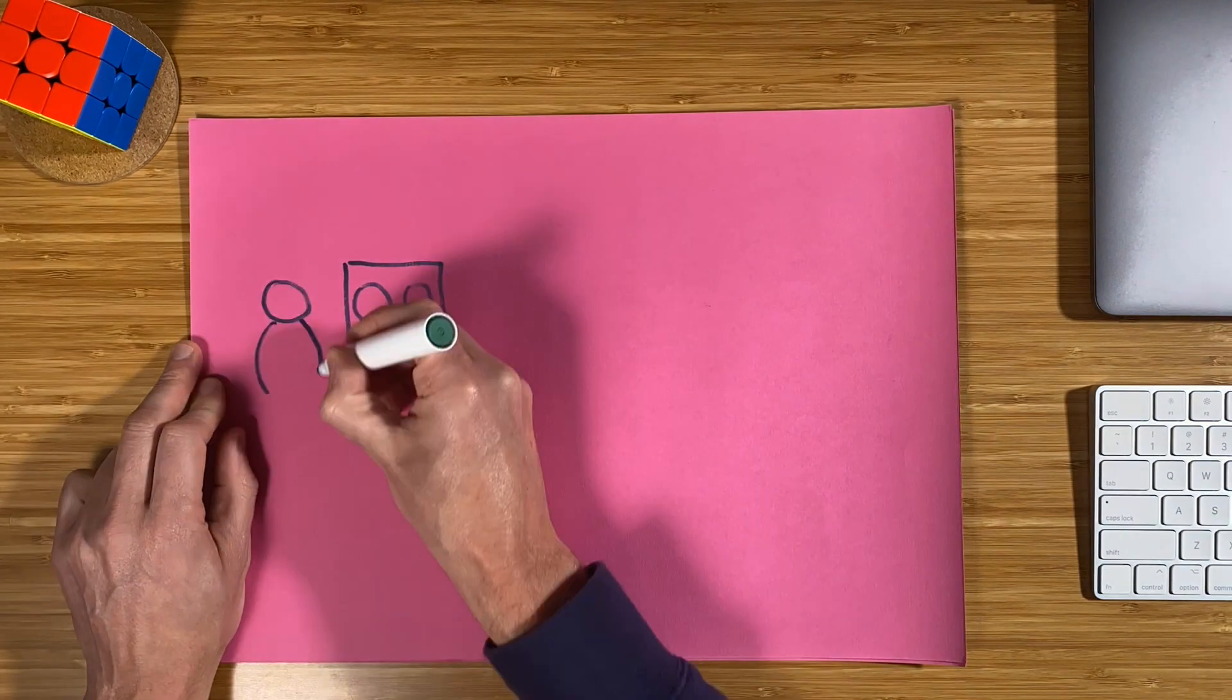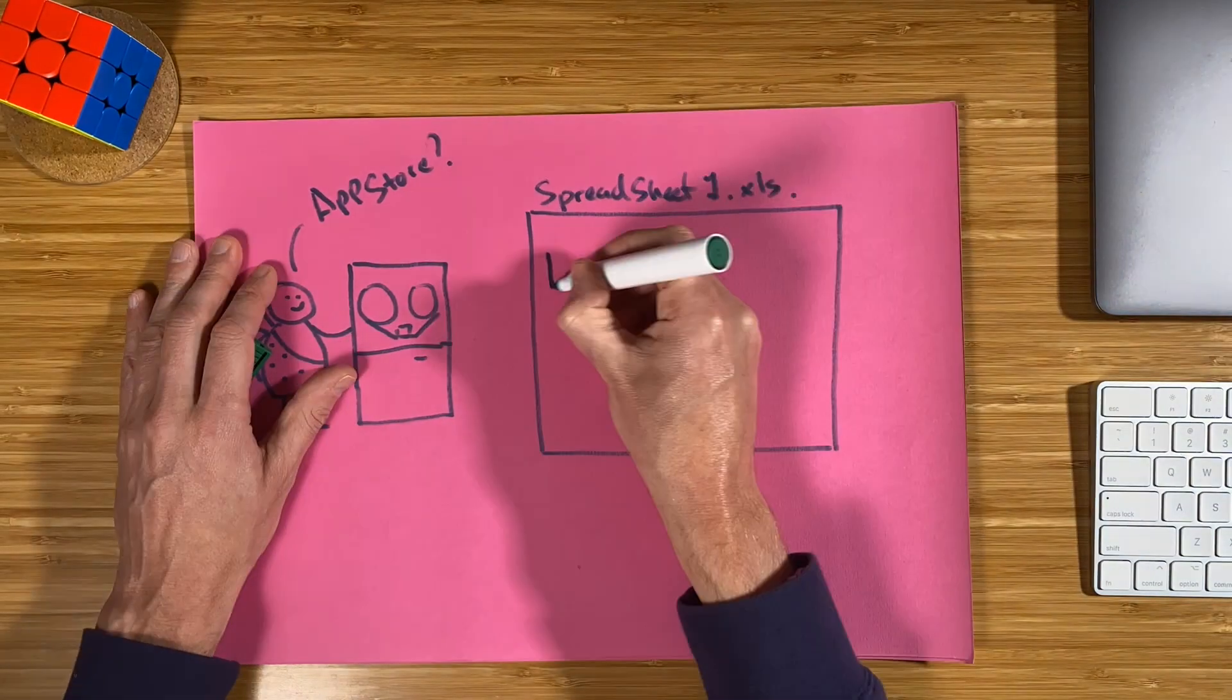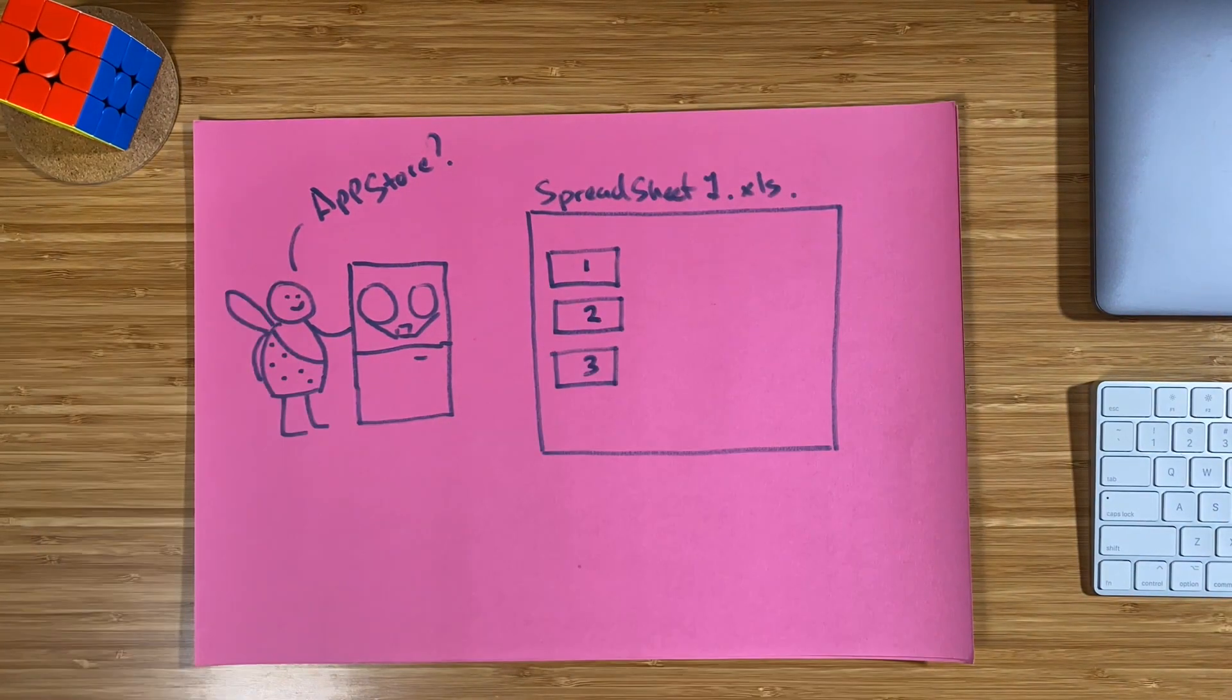So first of all let's just take a look at how we get computers to do the things that we need. If we take any computer, pretty much since the day dot of when computers were invented, we install applications and programs on that computer in order to perform the tasks that we need. So take for example a spreadsheet, something that most of us will be familiar with.